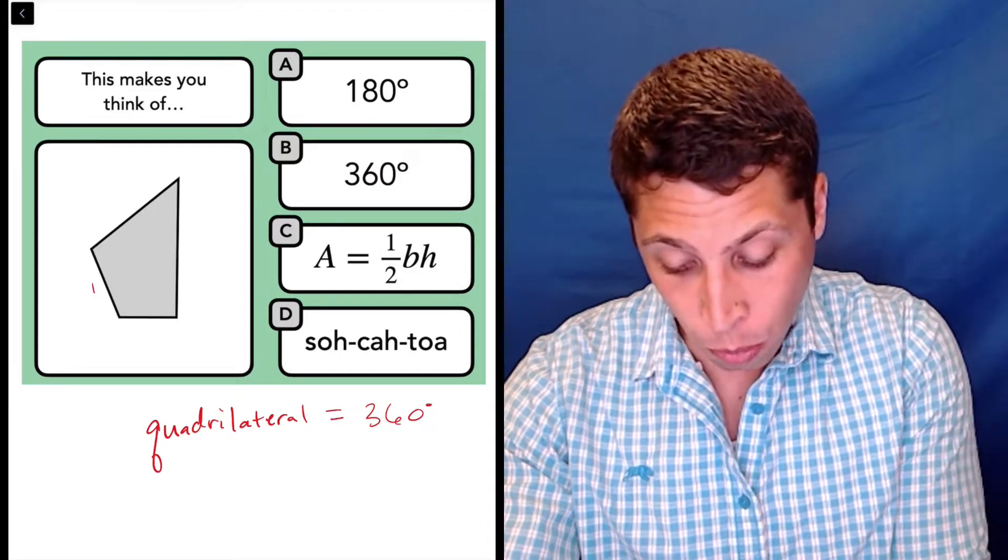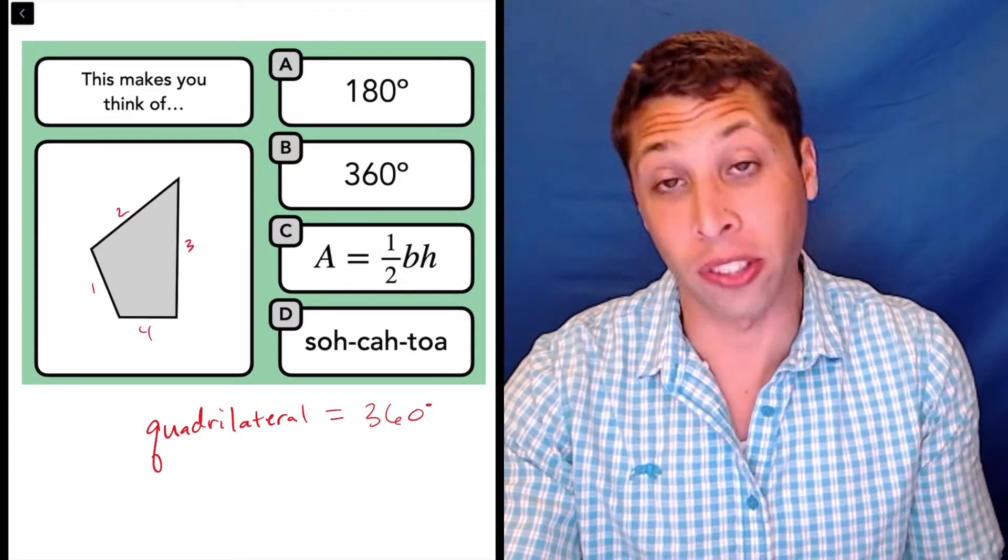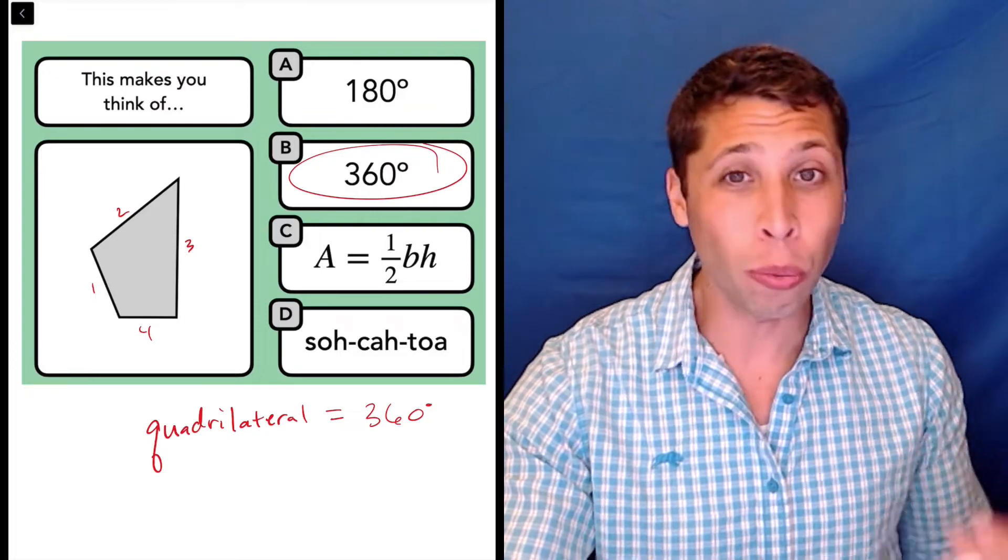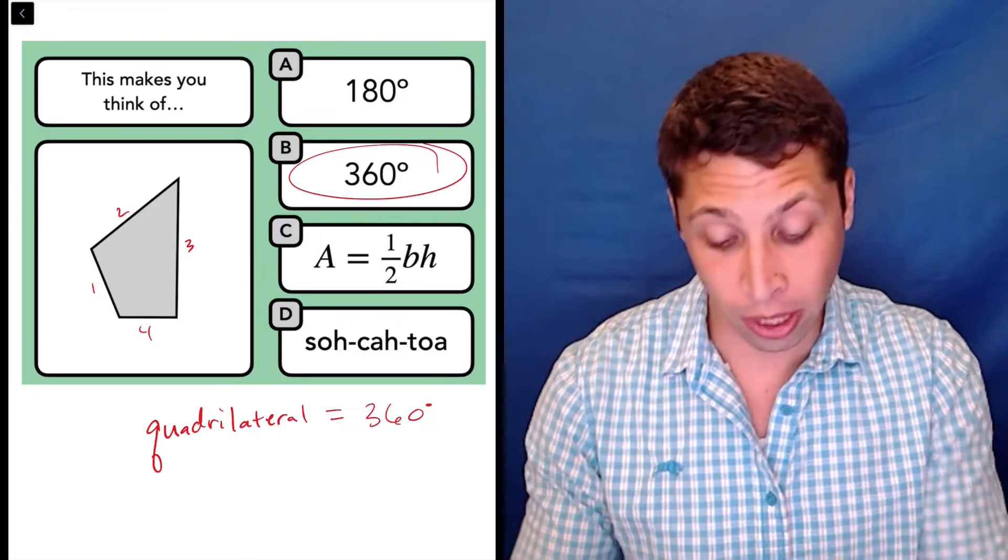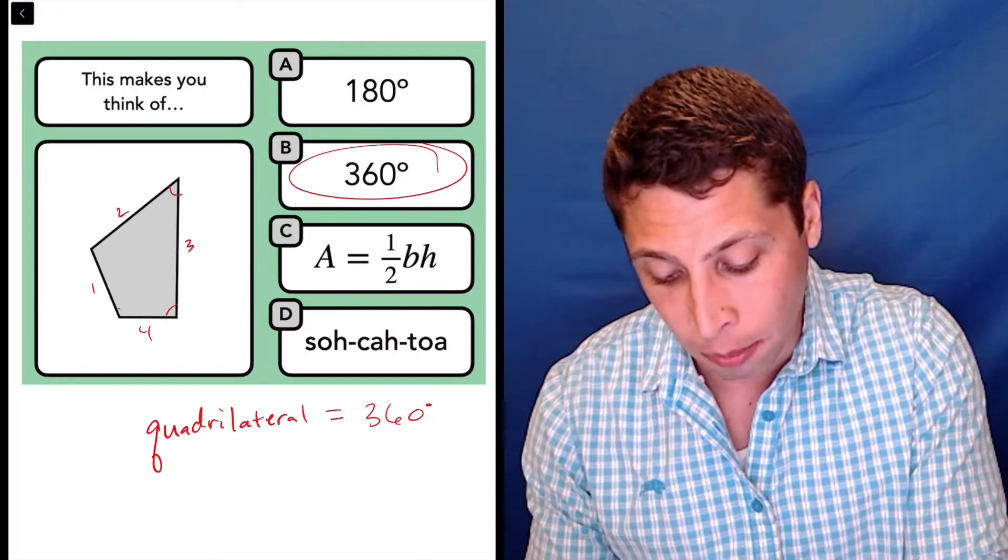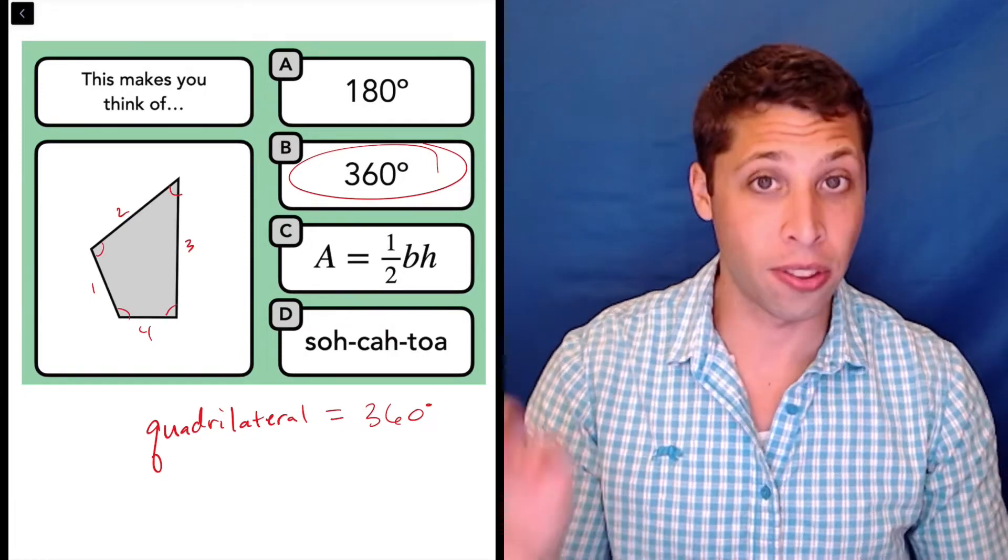Well what do we have here? One, two, three, four sides. This is a four-sided figure. Doesn't matter that it's a weird shape. If it's got four sides, the interior angles are 360 degrees. So we're talking about the sum of these four angles. That's what that means.